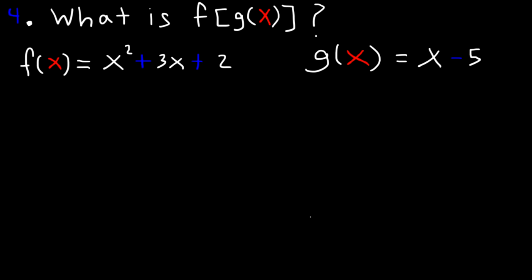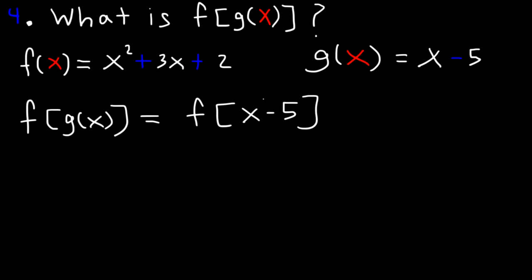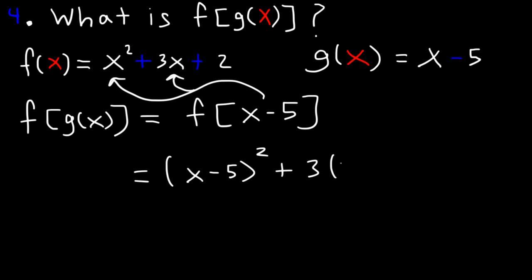Number 4: what is f of g of x? First, let's replace g of x with what it's equal to — that is, x minus 5. So we're looking for f of x minus 5, which means we need to take x minus 5 and plug it into each x value in f. So it's x minus 5, squared, plus 3 times x minus 5, plus 2.